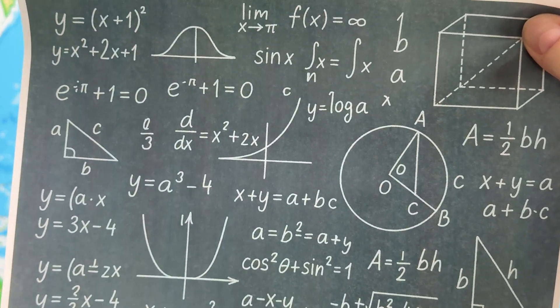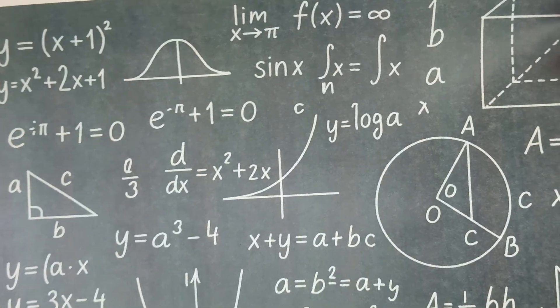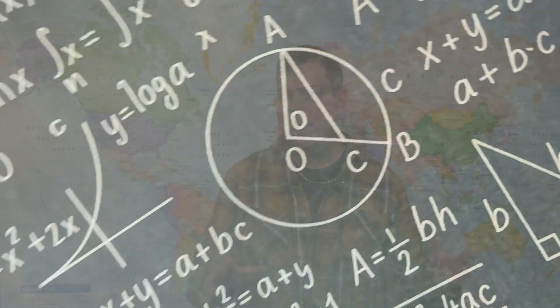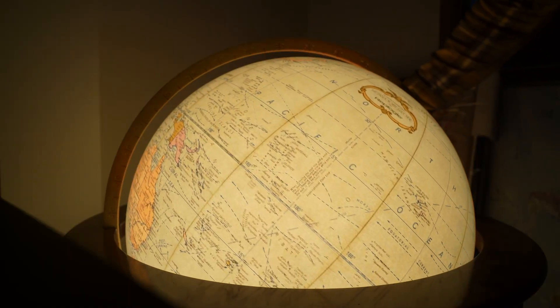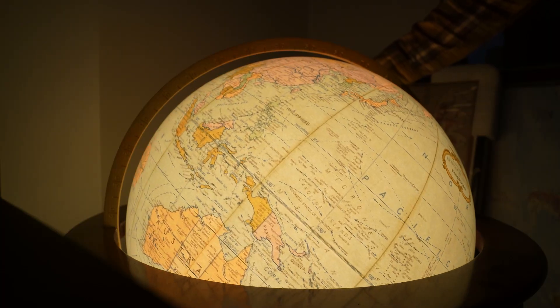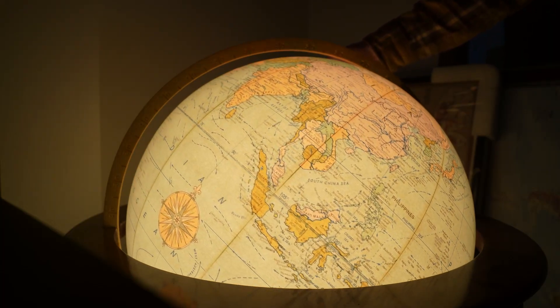Mercator knew this. He understood the trade-offs. He never intended for this to be hanging in classrooms or living rooms. It was a tool for sailors. But it became the standard anyway. So why did a 450 year old navigation tool become the default way we visualize the planet?